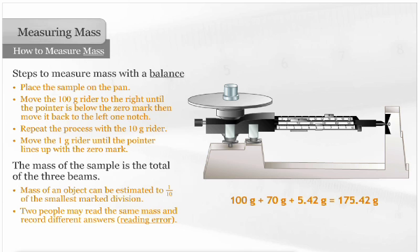Two people may read the same mass and record different answers. This is called the reading error. In this case, the reading error is plus or minus one-hundredth of a gram.